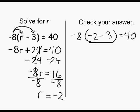Inside parentheses, we have negative 2 minus 3, which gives us negative 5. Next, we multiply negative 5 times negative 8, which gives us positive 40.